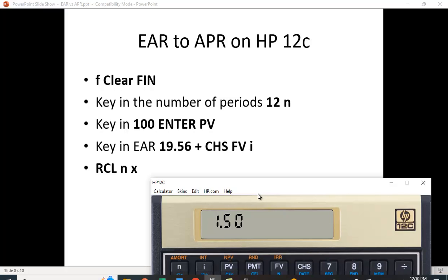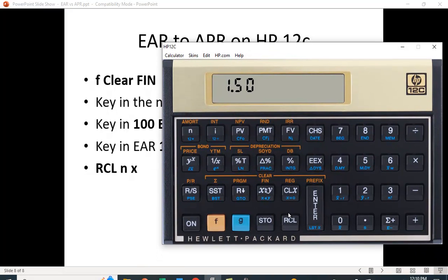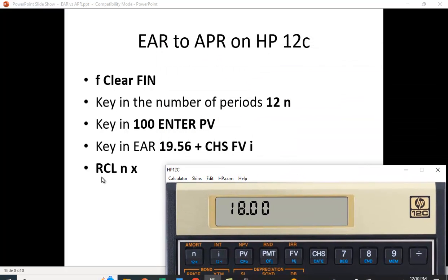Alright, so 19.56 plus change sign FV. Sorry, I have to keep moving this. I use the smaller skin. So there we get the 1.5% interest rate. So if you think about it, that was the conversion there.